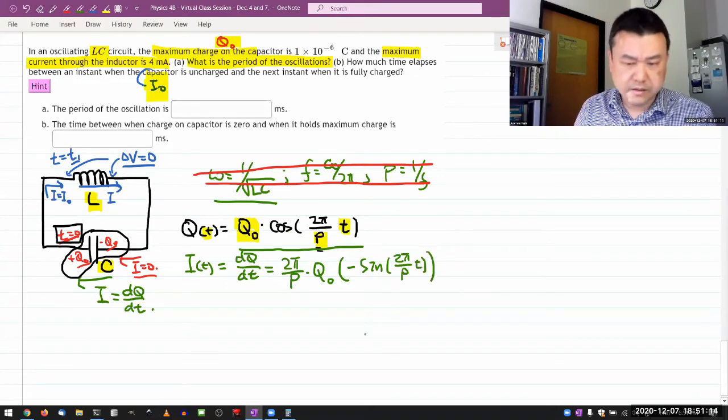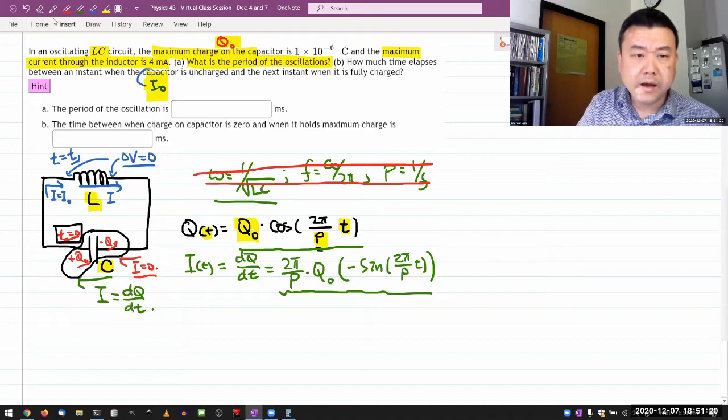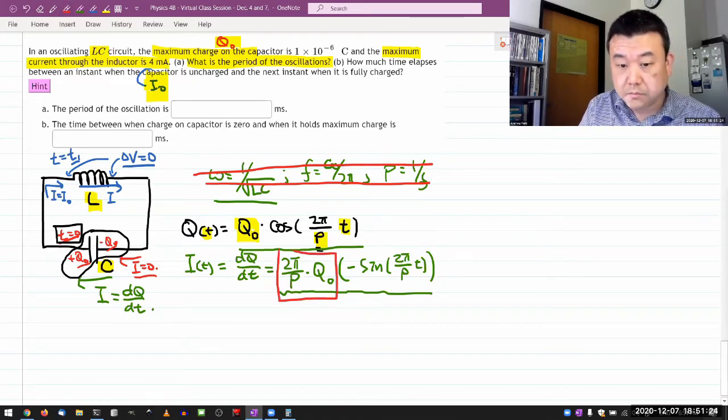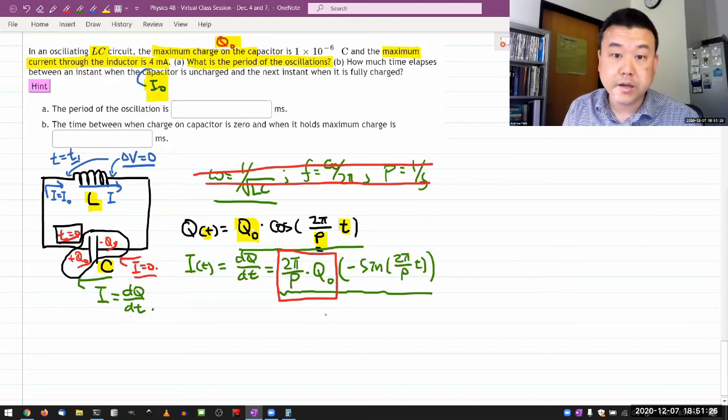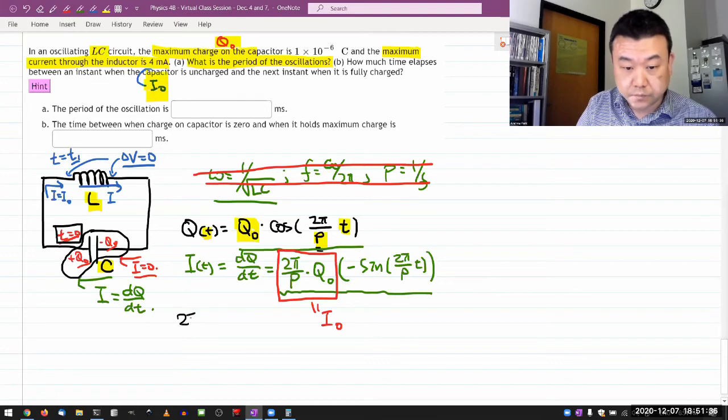And this is getting somewhere because as I stare at this expression for a while, I recognize that this particular combination must be the amplitude of oscillation for current. So this must be I naught.